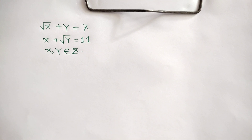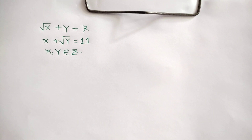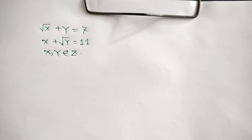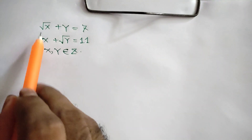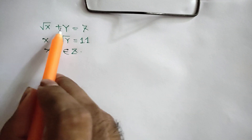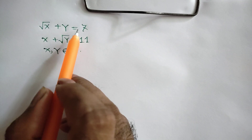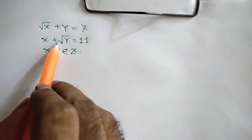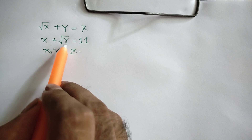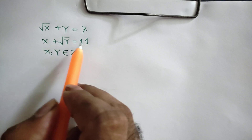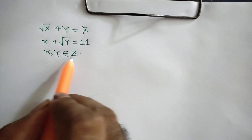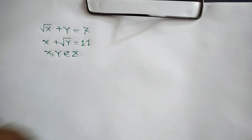Hi everyone. In this video I am going to show how to find the value of x and y where square root of x plus y is equal to 7, and x plus square root of y is equal to 11, and x and y are integers.